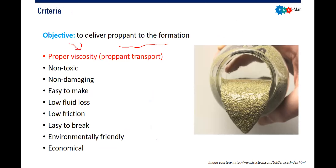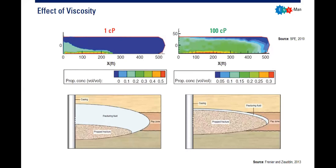Viscosity is very important for proppant transport. The fracturing fluid also needs to be non-toxic, non-damaging to the reservoir, easy to make because we make it on the fly during operation, have low fluid loss, low friction, and easy to break. After the hydraulic fracture is completed, the high-viscosity fracturing fluid needs to break so it will not damage the reservoir. It also needs to be environmentally friendly and economical.